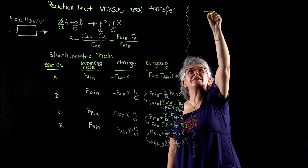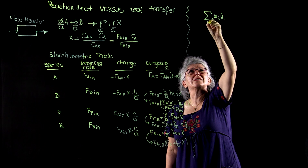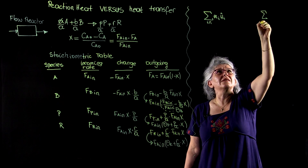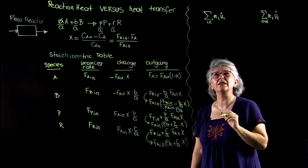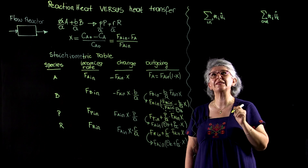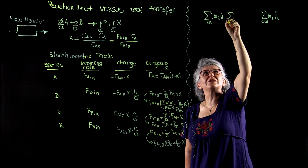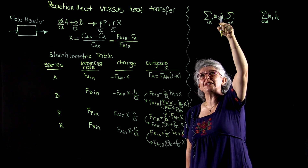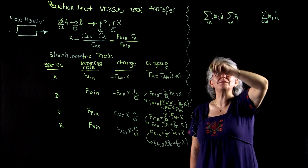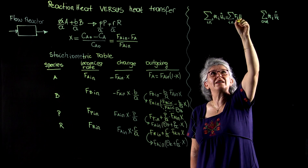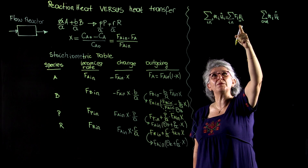Now we have two terms in the energy balance: the summation of the incoming streams and outgoing streams. I will convert them to their corresponding mole basis equivalents. In order to convert them, I have to do a little trick — instead of mass flow rate, I divide it by its molecular weight, and it will immediately become FI, the molar flux of the incoming stream. In order to have dimensional consistency, my enthalpy should have an underscore: this one is enthalpy per unit mass, and this is enthalpy per unit mole — molar enthalpy.